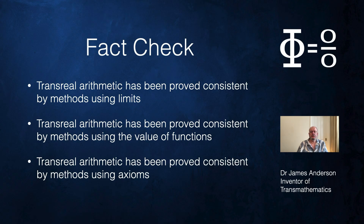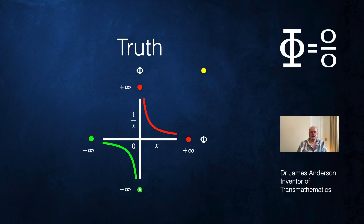Now that I've warned you about the psychological tricks embedded in the 1 over x proofs, I'm going to tell you just mathematical truths — we're finished with psychology. Here is the function 1 over x. In red I've shown the zero and positive parts of the function, in green the zero and negative parts, and for completeness I've also shown the nullity part of the function as a yellow dot.